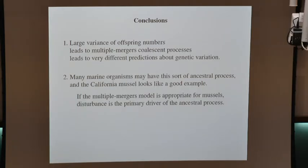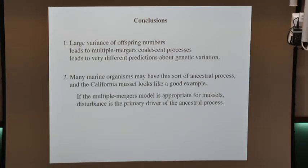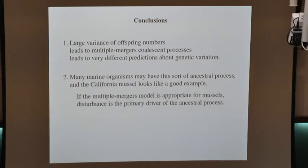Large variance in offspring numbers leads to these multiple mergers coalescent processes, which are very different from the Kingman coalescent. This will make sense for organisms where population turnover is determined largely by disturbance and organisms can have a very large number of offspring. The mussel example doesn't validate this in any rigorous way, but what you would really want to do is get multi-locus genomic data and see if the pattern across the genome is consistent with this model.